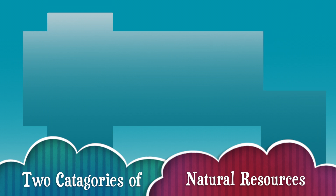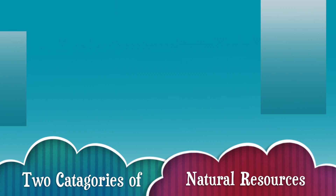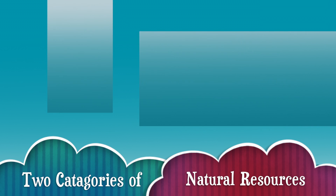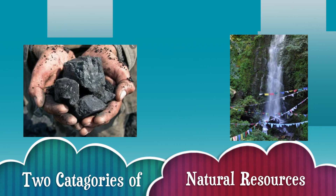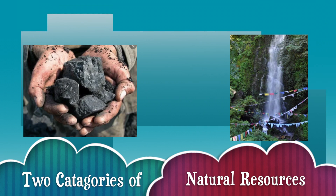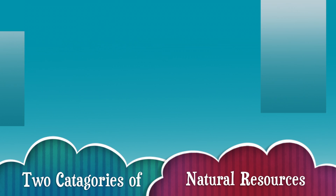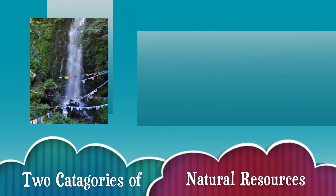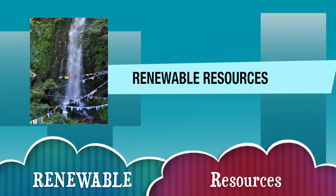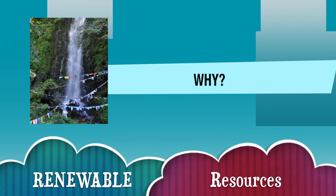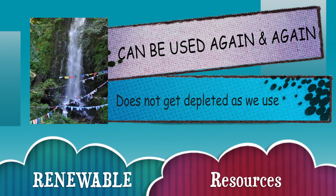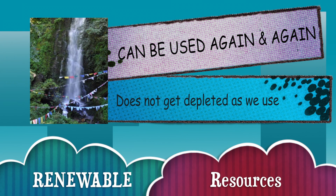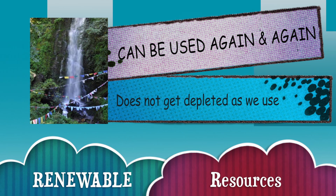We are going to look at two categories of natural resources. I will segregate resources into two categories again. Now we have coal here and water here — two categories of resources. Can you tell me what differences you see here? Water is an example of renewable resources. Since water can be used again and again without being depleted, water is an example of renewable resources. Renewable resources are those resources which can be used again and again and which should not get depleted as we use them.